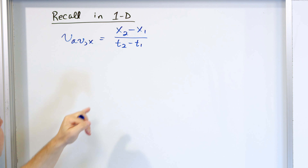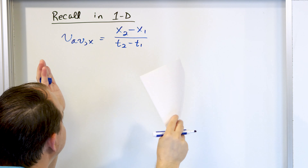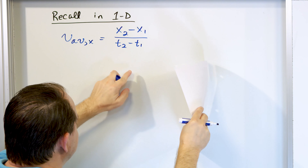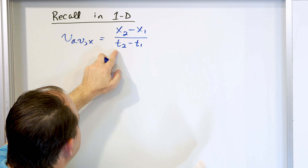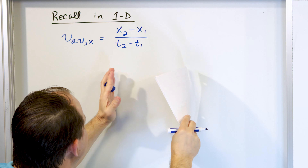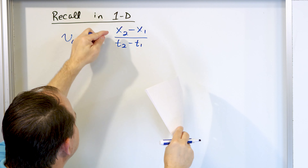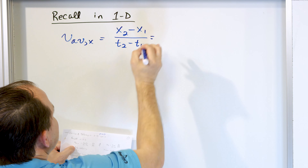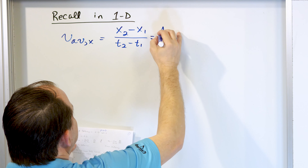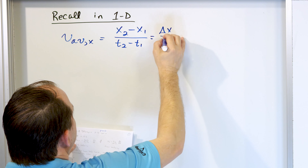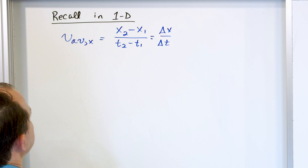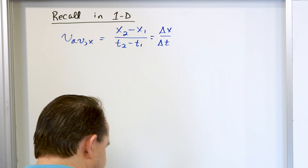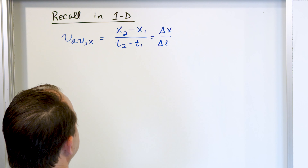All this means: when you subtract the x's, you figure out how far the thing moved — position 2 minus position 1, that's how far it moved. You divide by t2 minus t1, which is how much time elapsed. Distance divided by time — that's the average velocity. We use shorthand notation and say that's delta x over delta t.